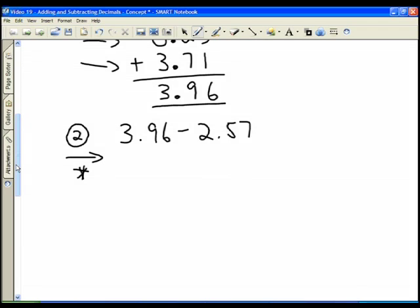You have to go from left to right. The 3.96 here has to be on top if we're going to stack these two decimals. So we have 3.96, and then we stack the 2.57 right underneath it, and now we're going to subtract.